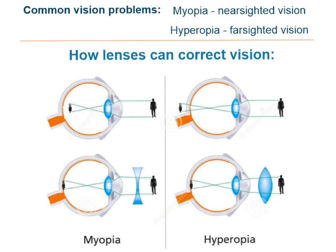Let's look at two very common vision problems. The first is myopia, oftentimes referred to as nearsighted vision. In this case a person can see objects that are near or up close, but they are unable to get a clear image for objects that are further away.